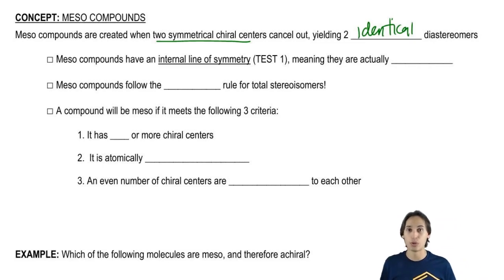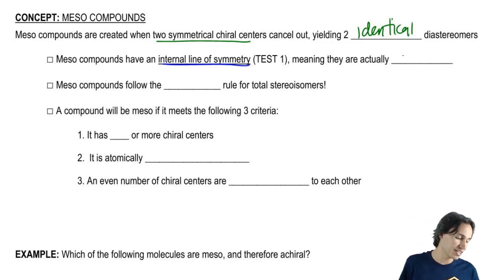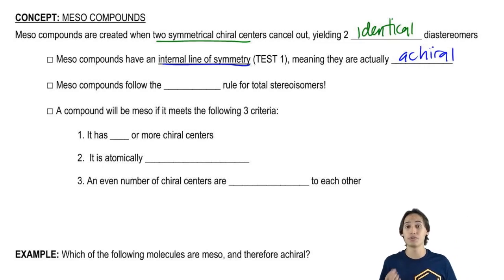So there's a few facts that you should know about meso compounds. First of all, meso compounds have an internal line of symmetry. Remember test one had to do with internal line of symmetry. So that means many times we actually will be able to use test one to predict that they're actually achiral. But sometimes we're not going to be able to use that test, which is why I'm going to give you guys some other rules specifically for meso compounds.